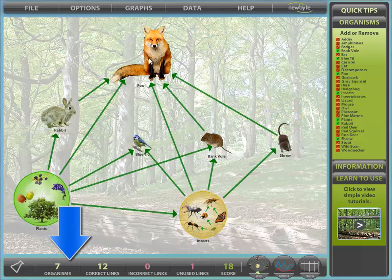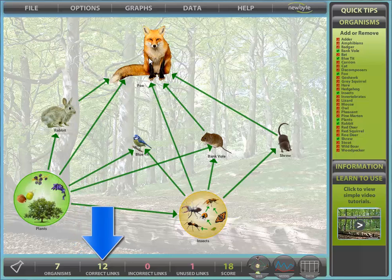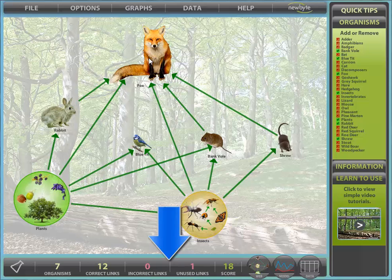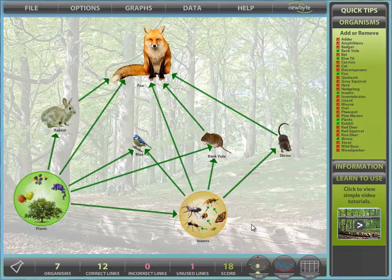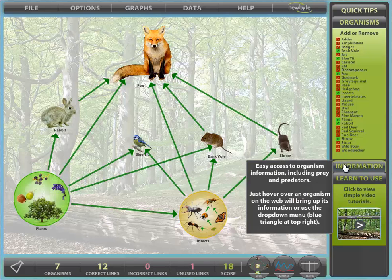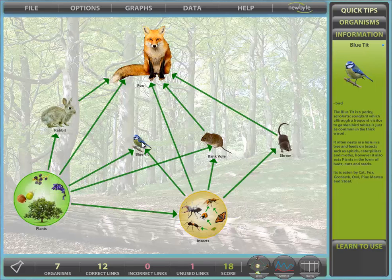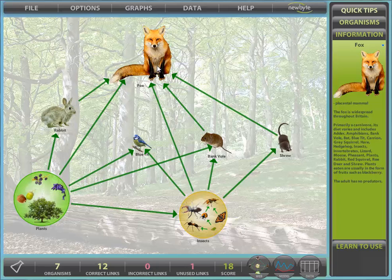Note the displays at the bottom of the screen, indicating information about your web and your total score. From this we can see that we have one unused link. We could use the information panel to check each organism, and that is easy, since all you have to do is hover over each to view its information.